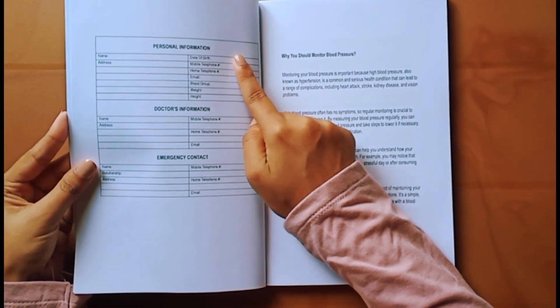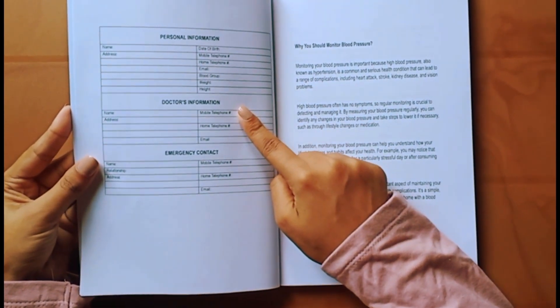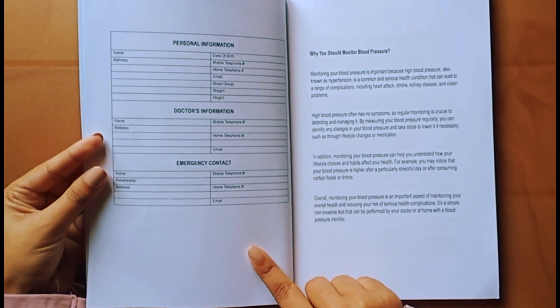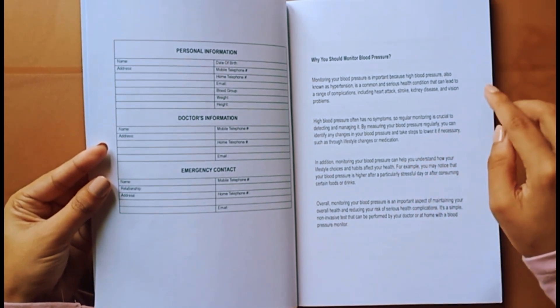It includes emergency contact details. In the next three pages, it mentions why you should monitor blood pressure, what your blood pressure numbers mean, and a summary table of good and bad blood pressure ranges.